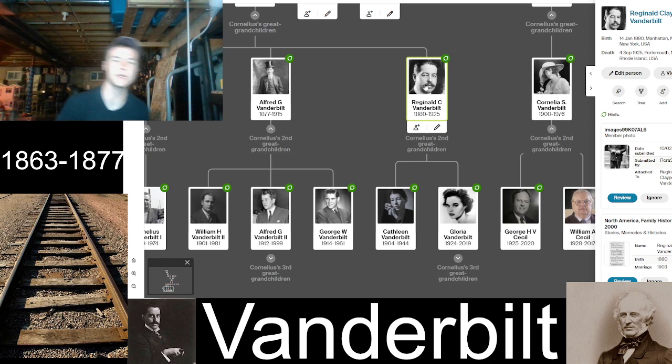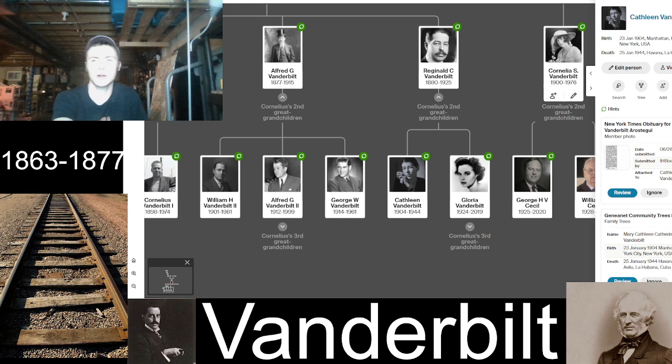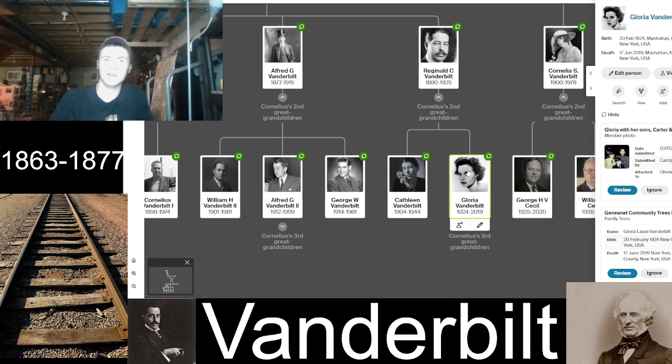Then there was Reginald Claypool Vanderbilt, born 1880, died 1925 in Rhode Island. He had two daughters: Kathleen Vanderbilt, 1904–1944, who died in Cuba, and the much more famous Gloria Vanderbilt. Gloria was born in 1924, died in 2019, and was a well-known model and fashion icon throughout her life.